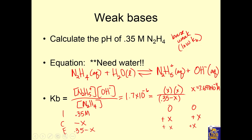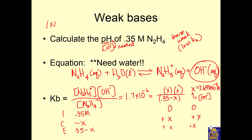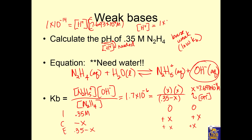Now, stop — what did we just find? X, but here X equals OH⁻ because this is a base. So OH⁻ equals 7.693 times 10 to the negative 4 molar. I need pH, but I have OH⁻, not H⁺. So I use the water equilibrium again: KW equals 1 times 10 to the negative 14. H⁺ equals KW divided by OH⁻: 1 times 10 to the negative 14 over 7.693 times 10 to the negative 4.